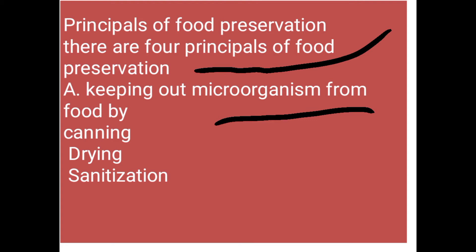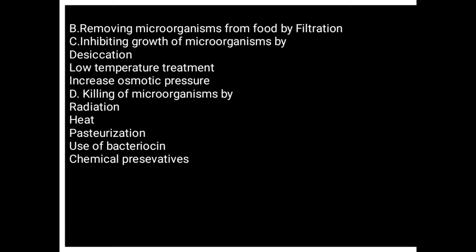پہلا اصول ہے: keeping out microorganisms from food۔ ہم نے microorganisms کو food سے دور رکھنا ہے۔ اس کے لیے جو طریقے ہیں وہ ہیں: canning، drying، اور sanitization۔ یہ ساری terminology ہم separate lectures میں discuss کریں گے۔